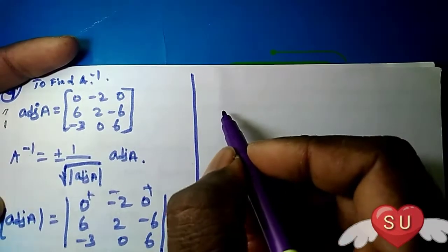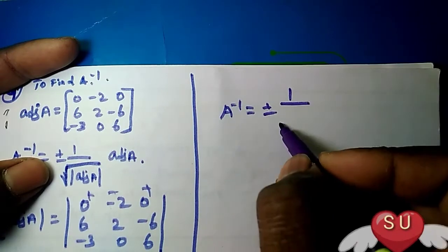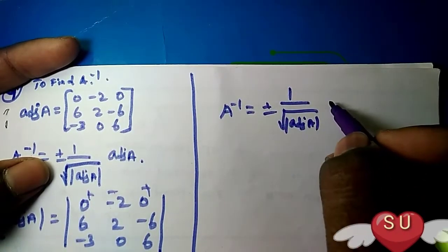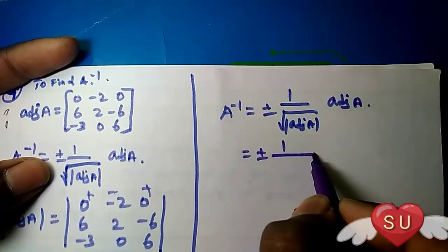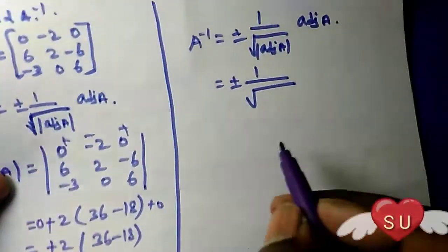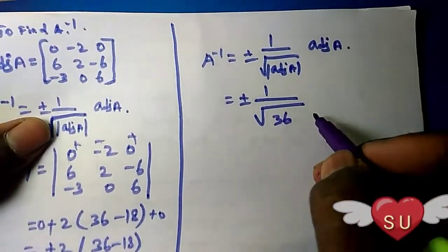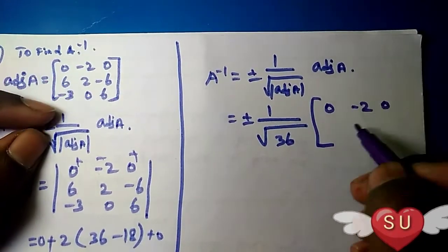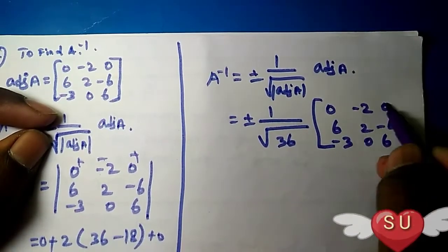A inverse equal plus or minus 1, root of A, minus of A into A. So, minus, minus, root, minus root of minus, minus, minus. 36 and 36. Next A, A inverse — next: minus, minus, minus, minus, minus, 6, minus 3, 0, 6.